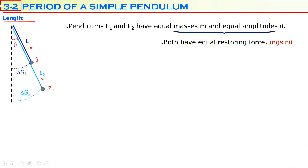The equation for restoring force is mg sine theta. Because both pendulums have the same mass, the same amplitude, and the same free-fall acceleration, both pendulums will have the same restoring force, equal to mg sine theta.